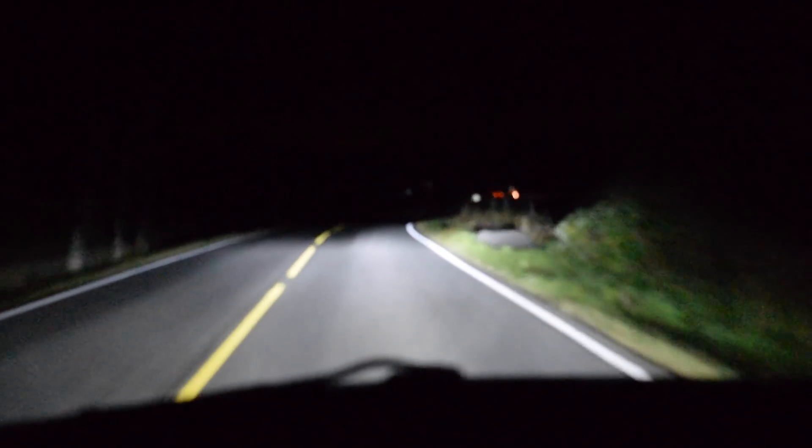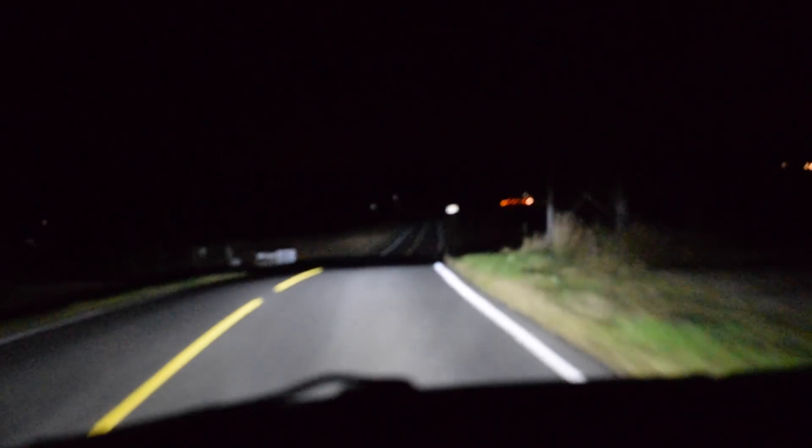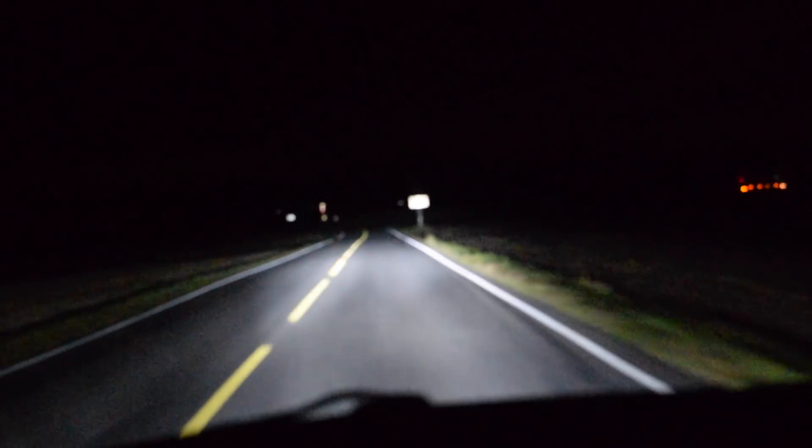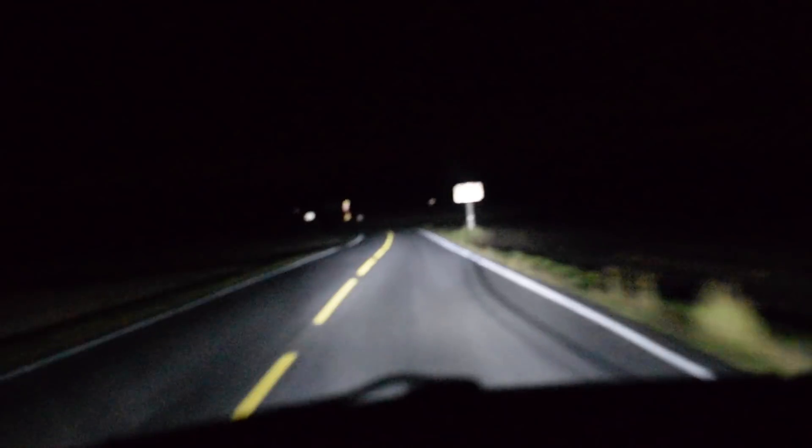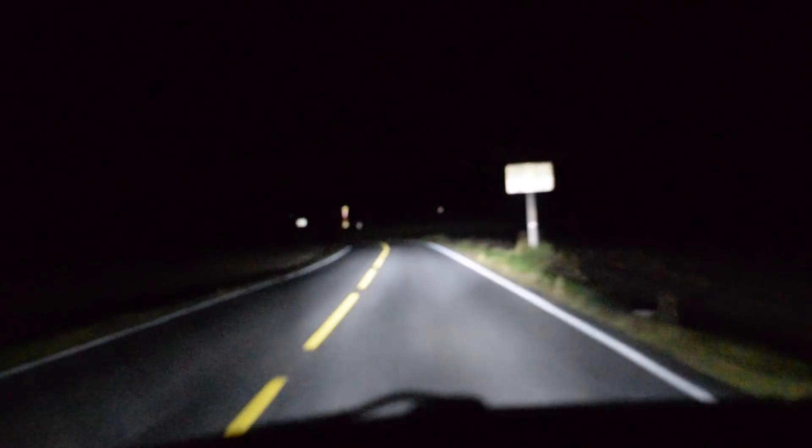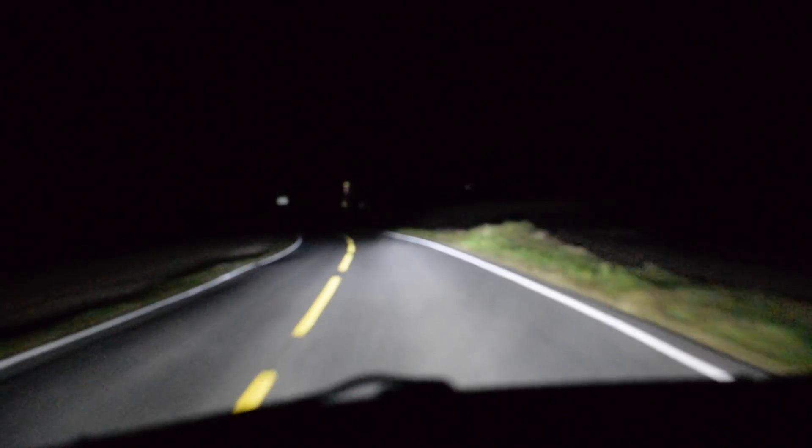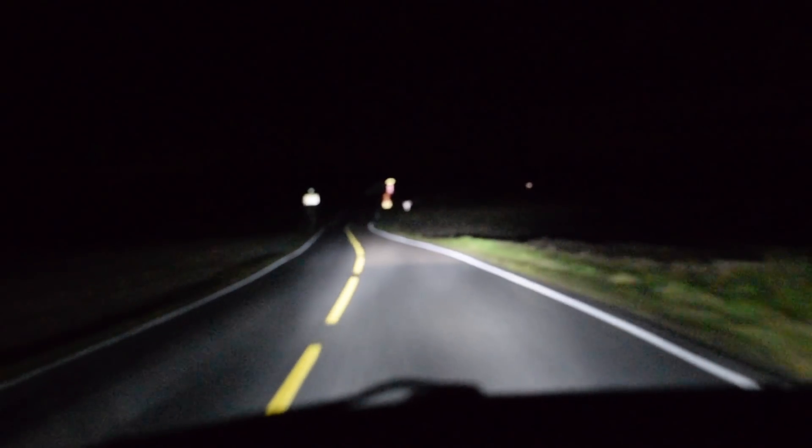And here is the high beam. Here we are driving on the road and as you can see the light pattern is still nice. There's a border and switching to high beam we get a lot more light on a longer distance and less light in front of the car. As you can see there, there's a big difference.